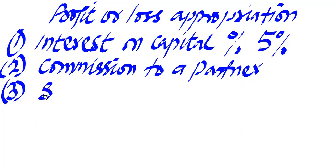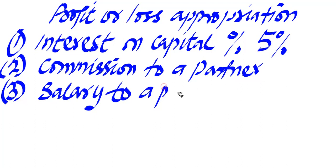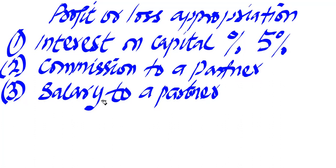Number three is salary to a partner. If a partner is an active partner — very much active in the partnership — they will be entitled to salary from the partnership. In the question, you will see 'salary to A' or 'salary to B,' and this will be attributed to the profit or loss appropriation account. But when you see salary standing on its own without being directed to any partner, it is a general matter and appears in the body of the profit or loss.